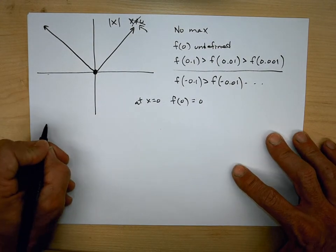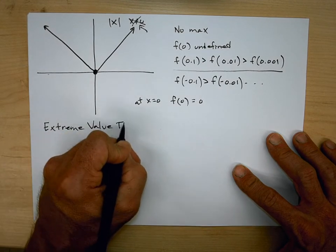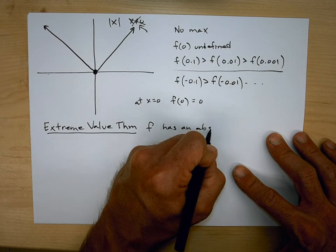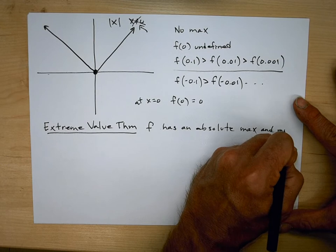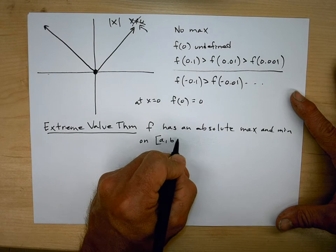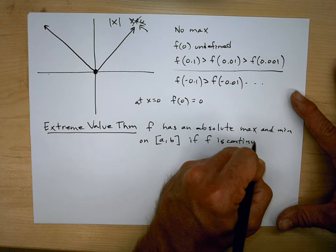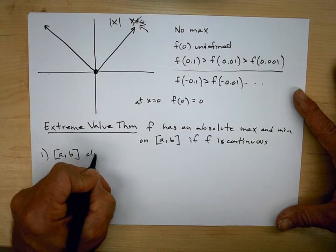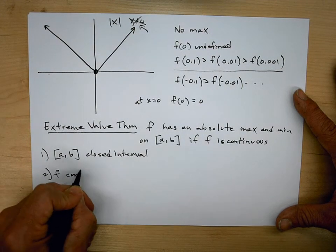This is basically called the Extreme Value Theorem, and it says that a function f has an absolute max and minimum on a closed interval [a, b] if f is continuous. So the two conditions are: one, you need a closed interval — closed meaning it includes the endpoints — and two, f has to be continuous.